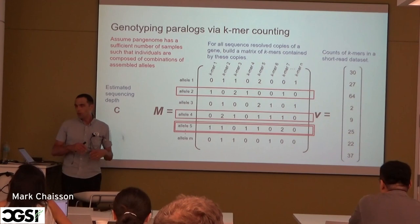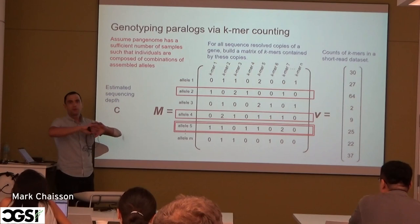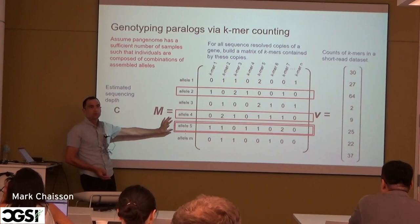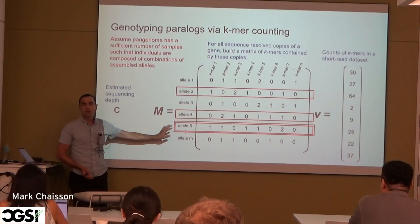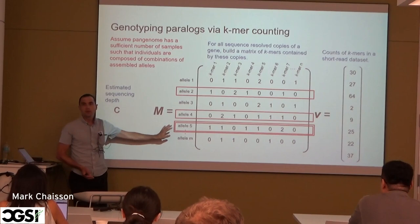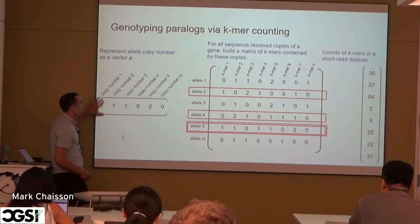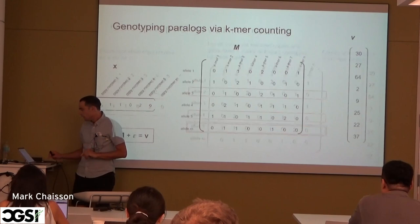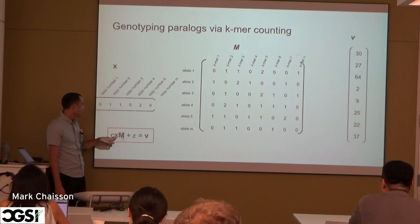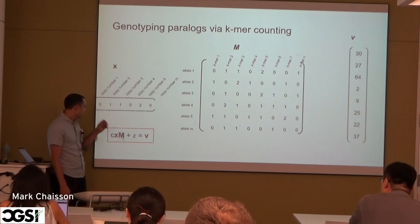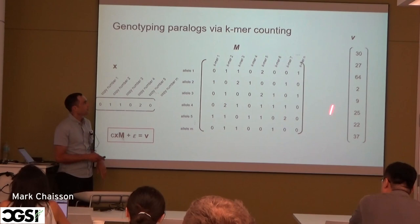The objective is that any individual — if our pan-genome is inclusive enough — will have genes representing some combination of rows in this matrix, possibly seeing one row multiple times, representing a copy number increase relative to the pan-genome. We solve for a copy number vector X that stores how often each allele occurs in the sample genome. We say that expected coverage times the copy number matrix times the k-mer matrix plus noise equals the observations from our Illumina dataset.